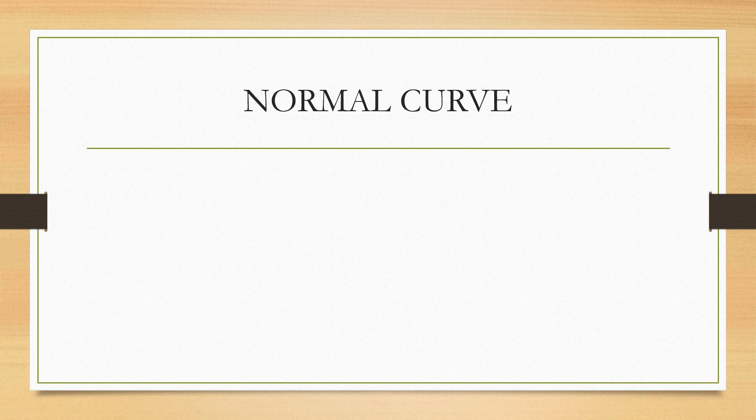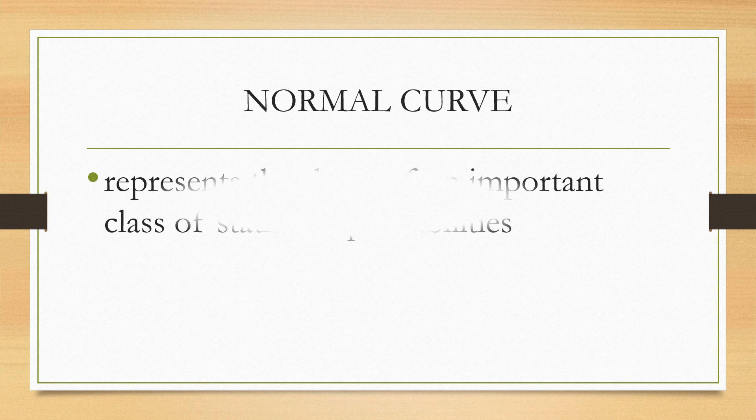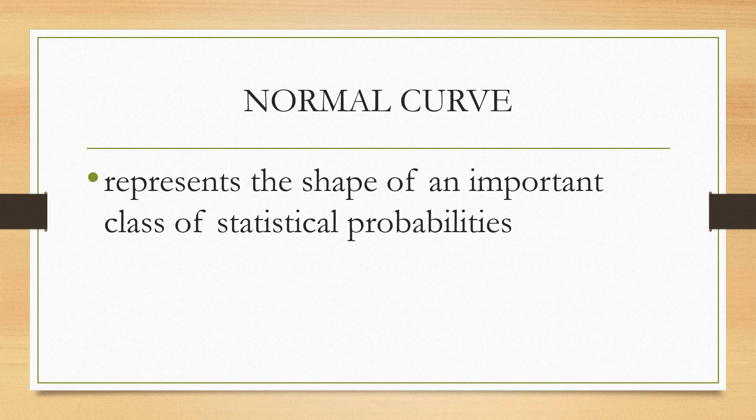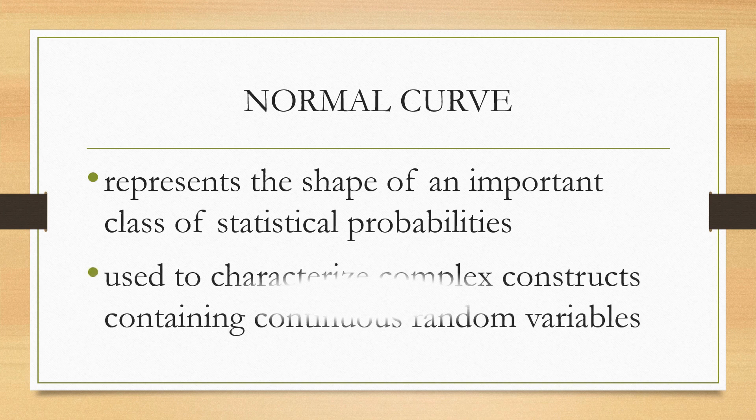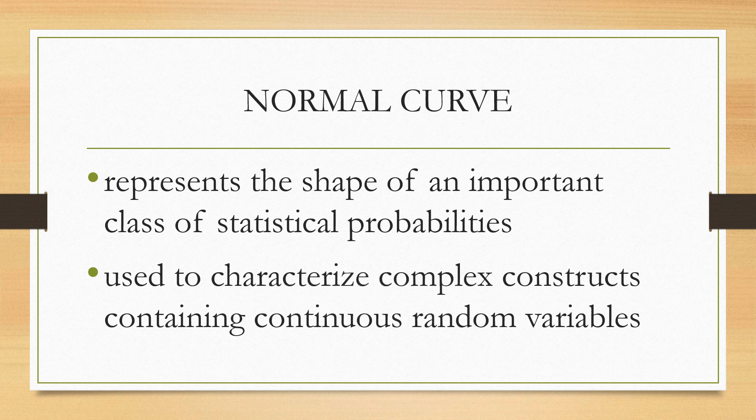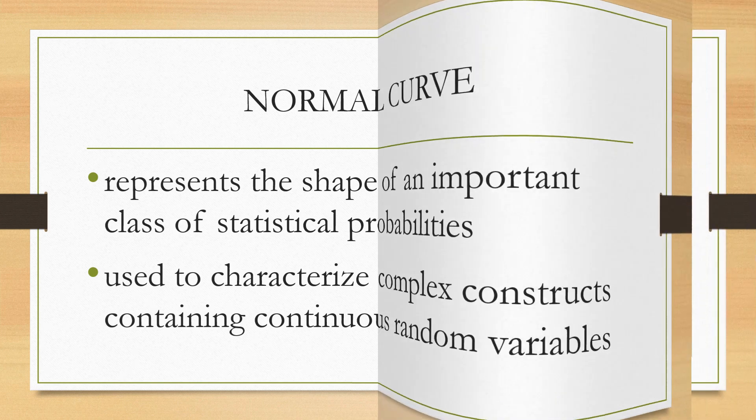The normal curve represents the shape of an important class of statistical probabilities. The normal curve is used to characterize complex constructs containing continuous random variables. Many phenomena observed in nature have been found to follow a normal distribution. Some human attributes such as height, weight, intelligence, and even social skills can be said to be normally distributed.